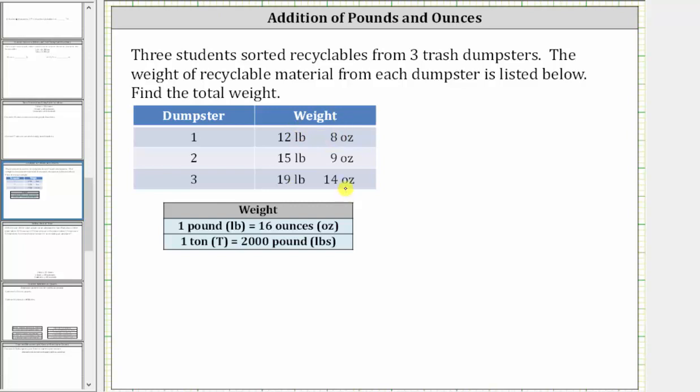Notice how the weight is given in pounds and ounces. To determine the total weight, we add the ounces and we add the pounds. But if the number of ounces is 16 or more, we have to convert the ounces to pounds and ounces.